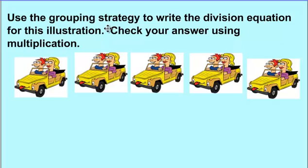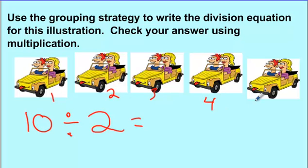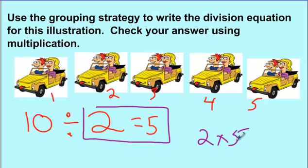Now this is a challenging one: use the grouping strategy to write the division equation for this illustration and check your answer using multiplication. The first number in division always stands for how many shareable items we have. We're sharing people — we have ten people. The grouping method asks: groups of what? They're in groups of two — five groups of two. So we're putting them into groups of two, and the answer is five groups. Check it: two times five is ten, and ten matches — we did it properly.